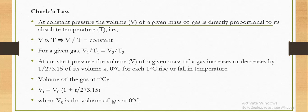At constant pressure, the volume V of a given mass of a gas increases or decreases by 1/273.15 of its volume at 0°C for each 1°C rise or fall in temperature. Volume of the gas at t°C is Vₜ = V₀(1 + t/273.15), where V₀ is the volume of gas at 0°C.